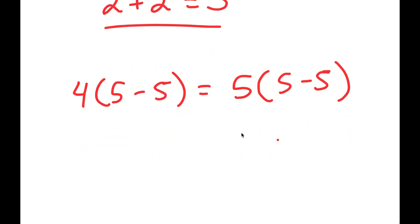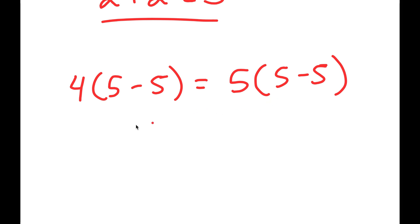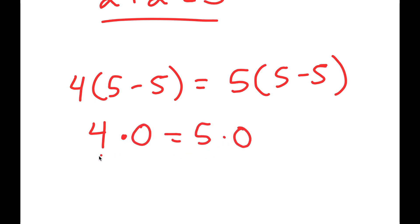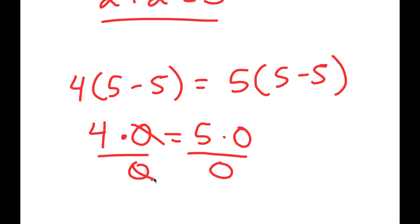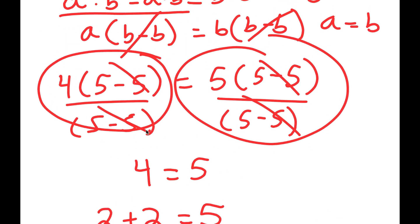I have 4 times (5 minus 5) is equal to 5 times (5 minus 5). Instead of just dividing both sides by (5 minus 5), think about what 5 minus 5 actually is — it's equal to 0. So this is basically 4 times 0 is equal to 5 times 0. If I try to divide both sides by 0, well, 0 divided by 0 is not equal to 1 — it's indeterminate. So we can't actually cancel these out, because canceling them implies that 0 divided by 0 is equal to 1, which is wrong. That's where I made the mistake: dividing by (5 minus 5) is dividing by 0, and that is against the laws of mathematics.